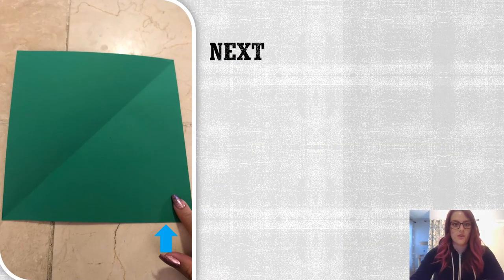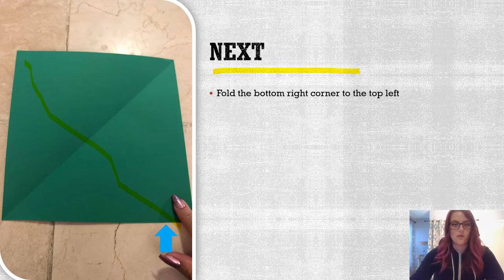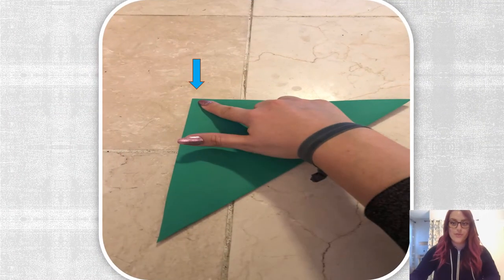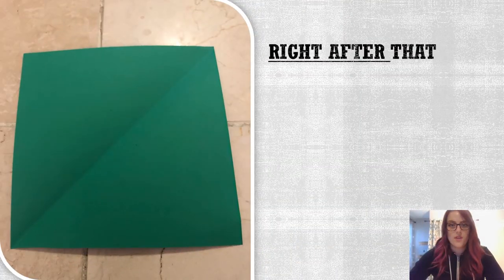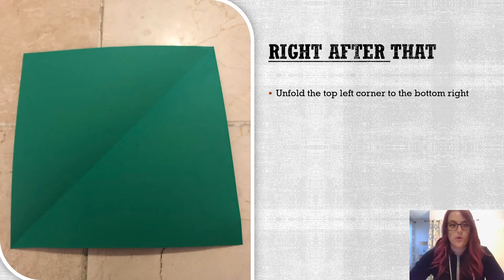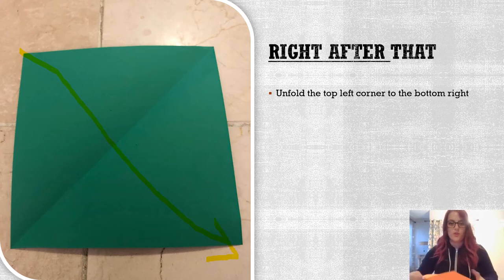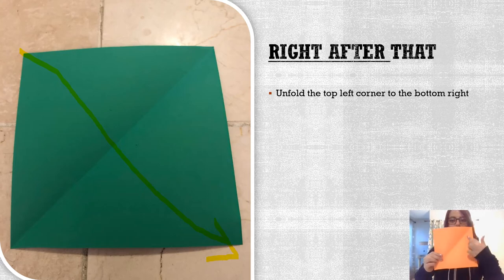Next, take the bottom right corner where the blue arrow is and fold it to the top left corner. You can see the crease from the previous fold. Once you fold it up, it should look just like in the picture. Right after that, unfold the top left corner back to the bottom right, and it should look like this — you should have one crease down the middle.